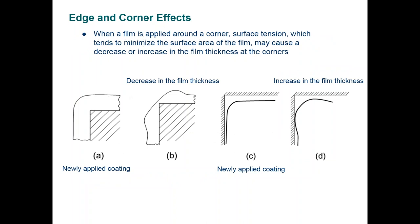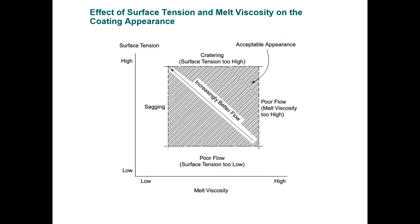Another thing we pay attention to in coatings are corner effects — where you have an inconsistent coating due to a decrease in film thickness caused by inconsistent viscosity or rate of evaporation. That goes for corners as well as the inside of square-type packaging. Surface tension and melt viscosity on the coating affects the finish or appearance, and we want to control the surface tension toward improved coating.